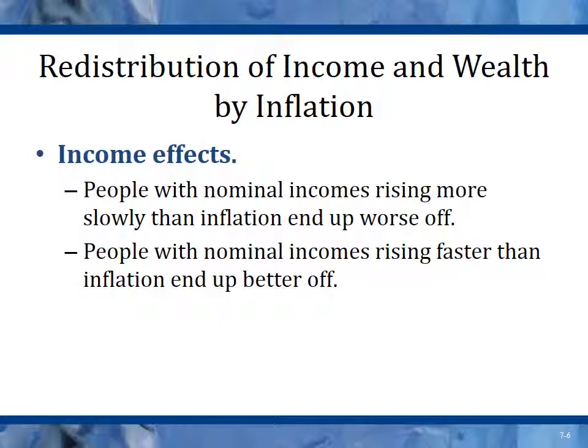Redistribution of income and wealth by inflation: inflation is a redistributive process. People with nominal incomes rising more slowly than inflation end up worse off — their actual buying power decreases. People with nominal incomes rising faster than inflation end up better off. For example, if your income is rising at four percent a year and inflation is at three percent per year, your buying power is actually increasing.